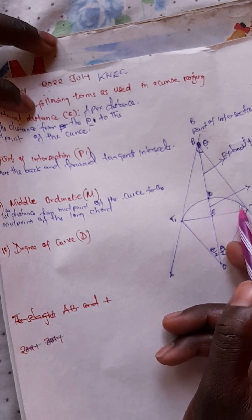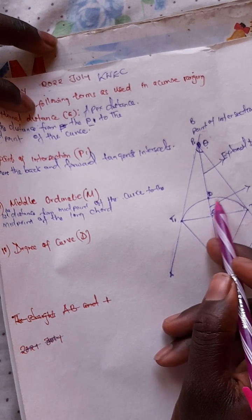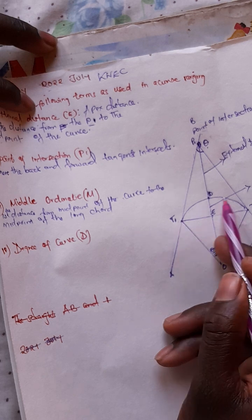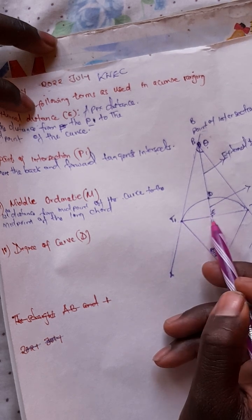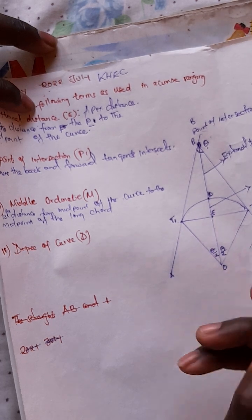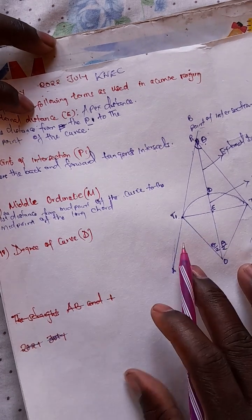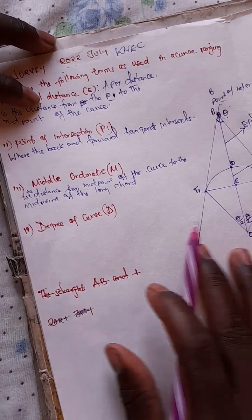This is the long chord, and this is the arc length or curve length. So the mid-ordinate is the distance from the midpoint of the curve length to the midpoint of the long chord.